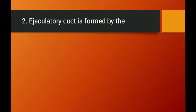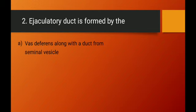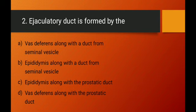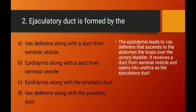The options: Option A — vas deferens along with the duct from the seminal vesicle — is the right answer. Option B (epididymis with seminal vesicle duct) is wrong, Option C (epididymis with prostatic duct) is wrong, and Option D (vas deferens with prostatic duct) is also wrong. The epididymis leads to the vas deferens, which ascends to the abdomen, loops over the urinary bladder, receives the seminal vesicle duct, and opens as the ejaculatory duct. Option A is the right answer.